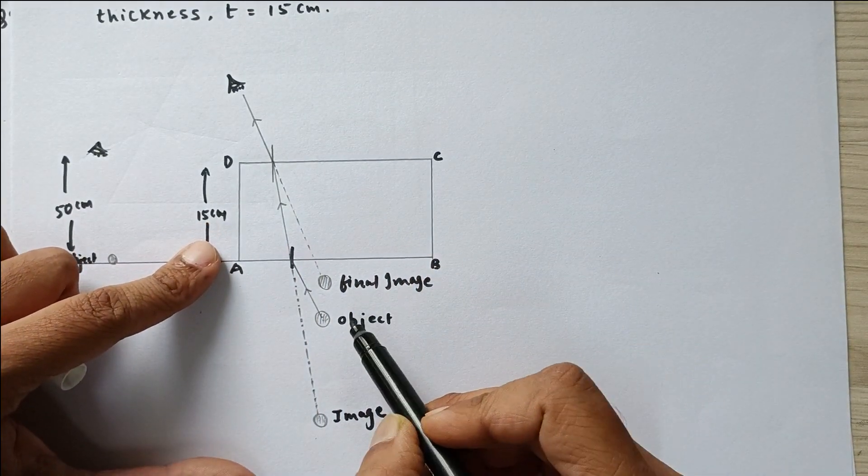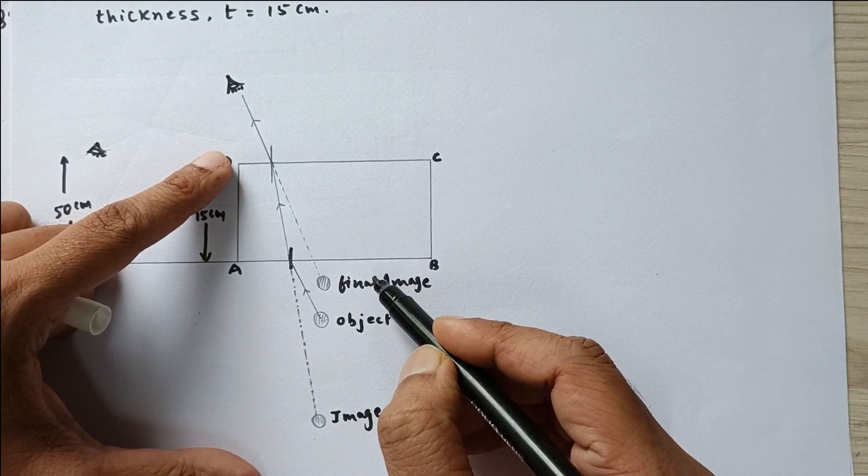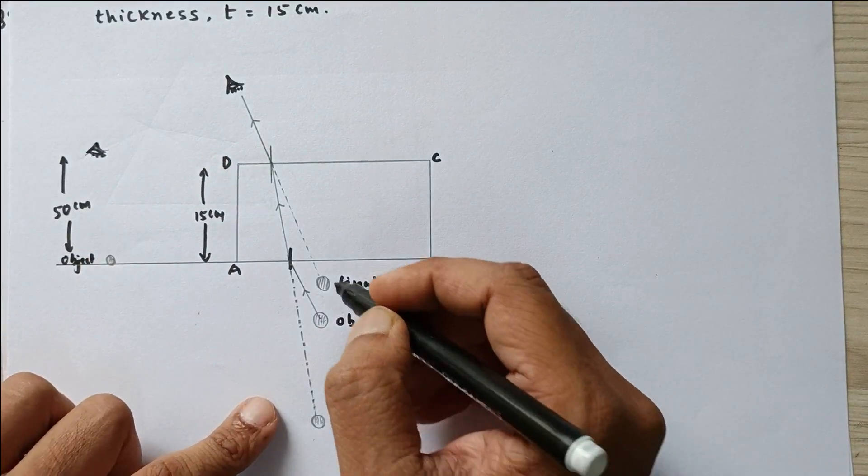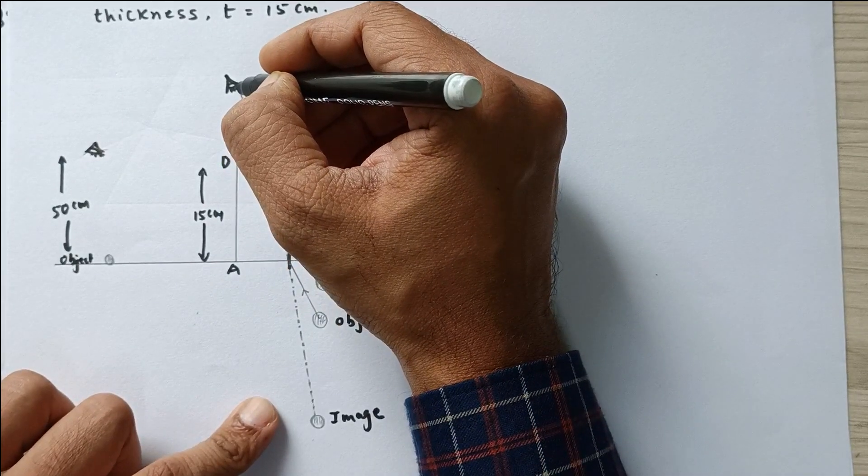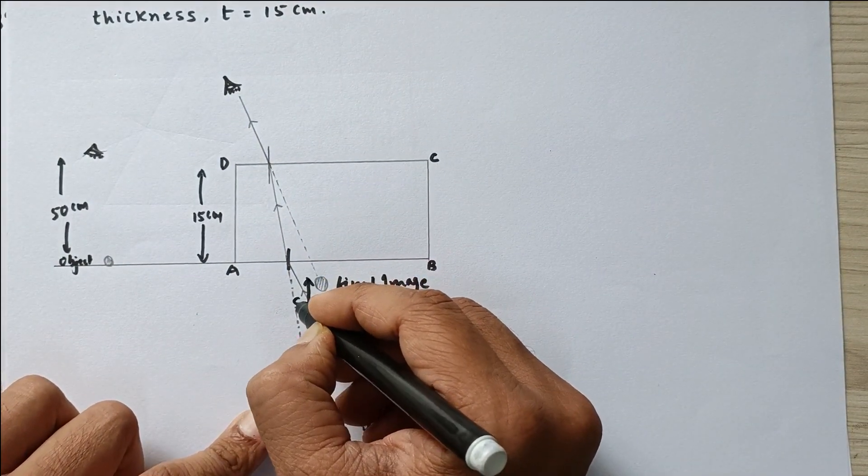So for surface AB this is the object and this is the image. For surface CD this is the object and that is the image. Now if you look carefully, overall when this ray goes into the eye of the observer, this is the final shift S.